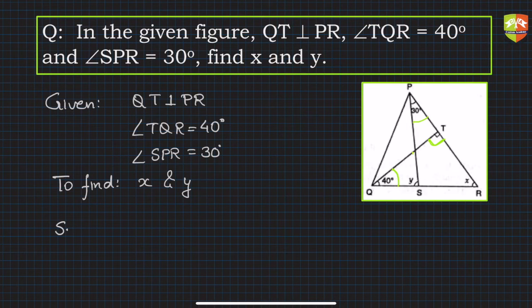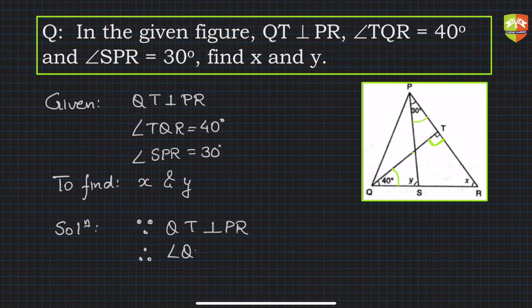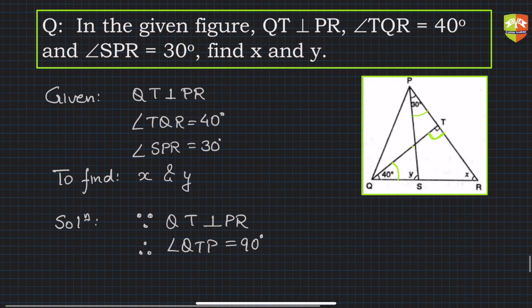So let's solve this problem now. If you see, since QT is perpendicular to PR, therefore we can say that angle QTP is 90 degrees, right angle.